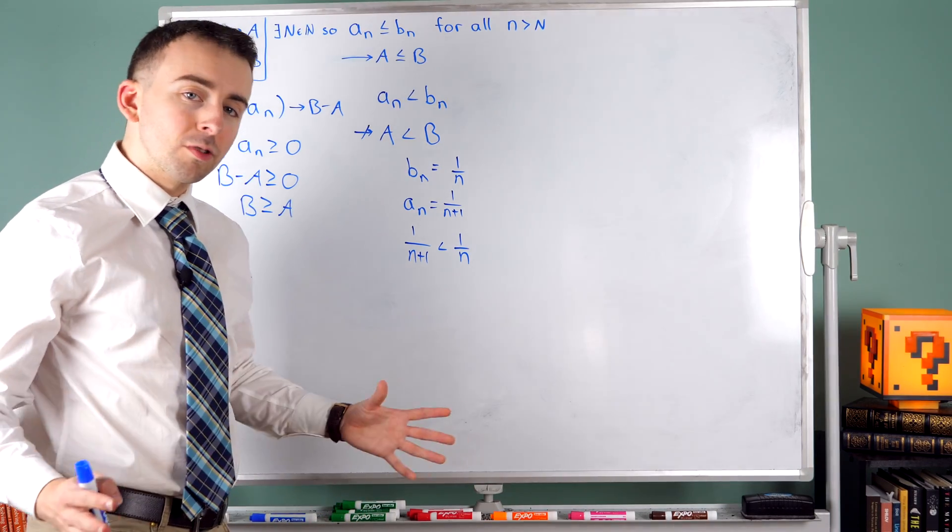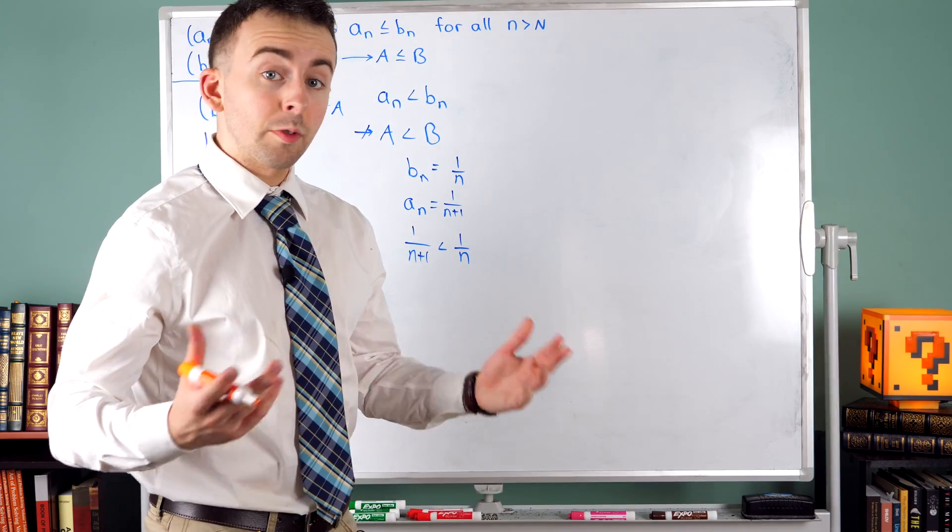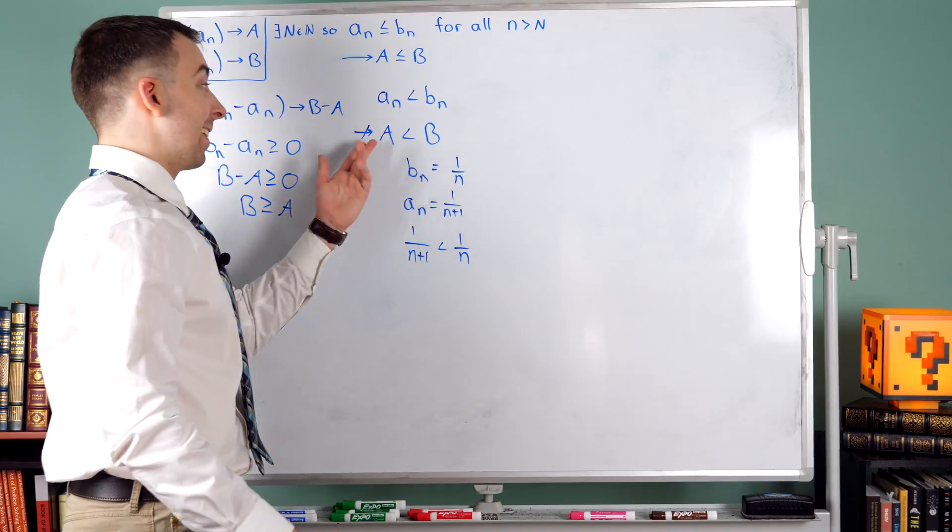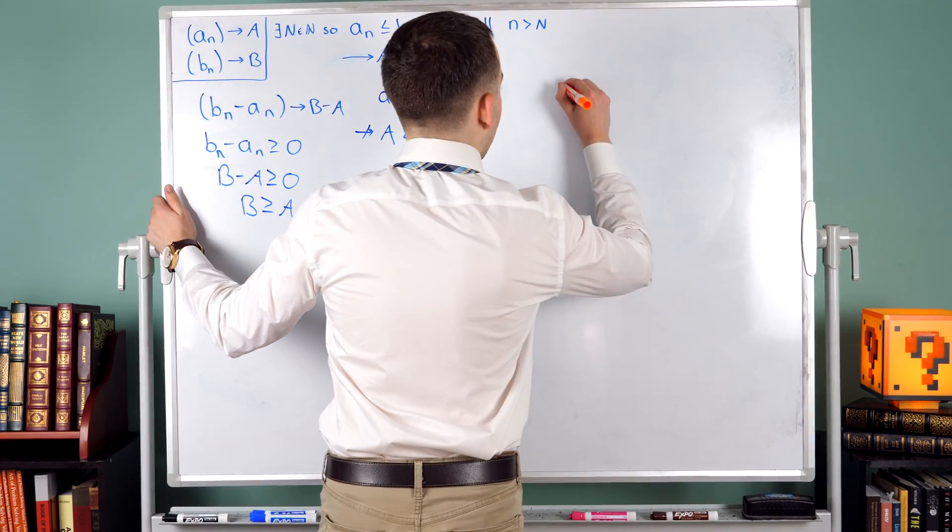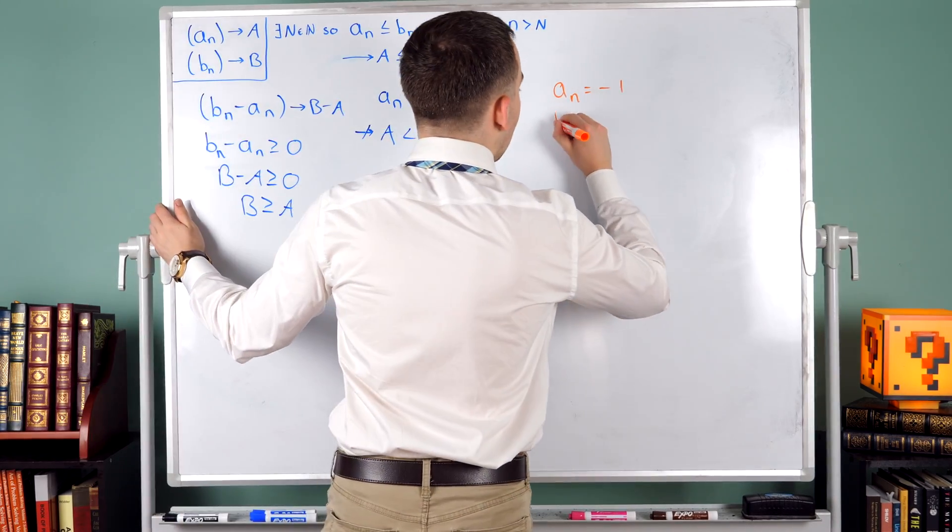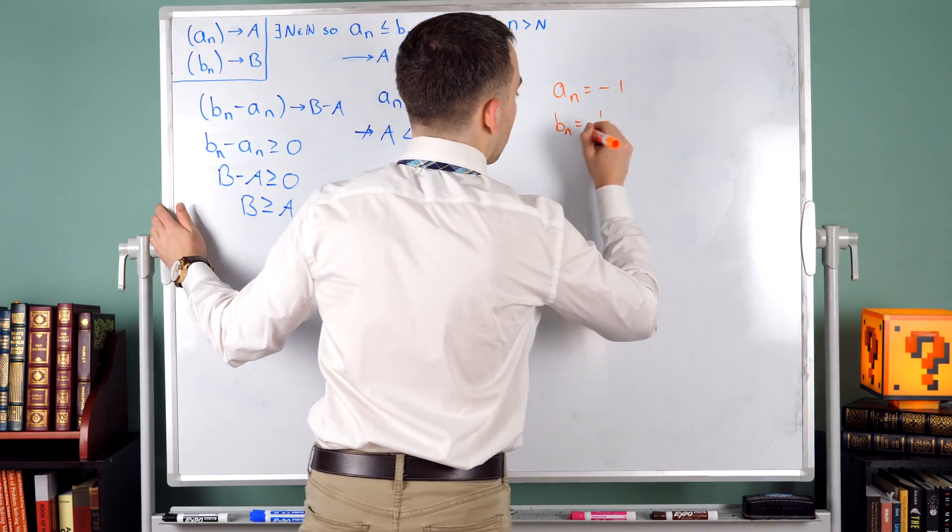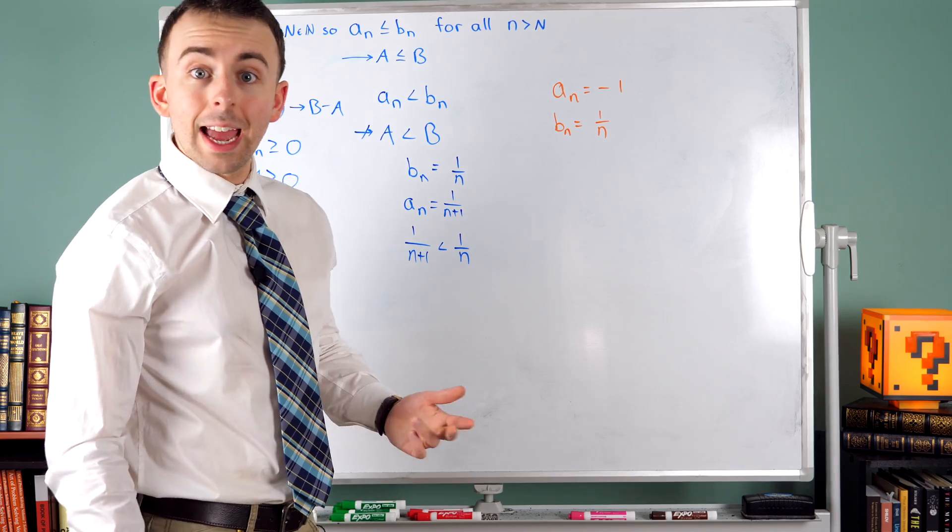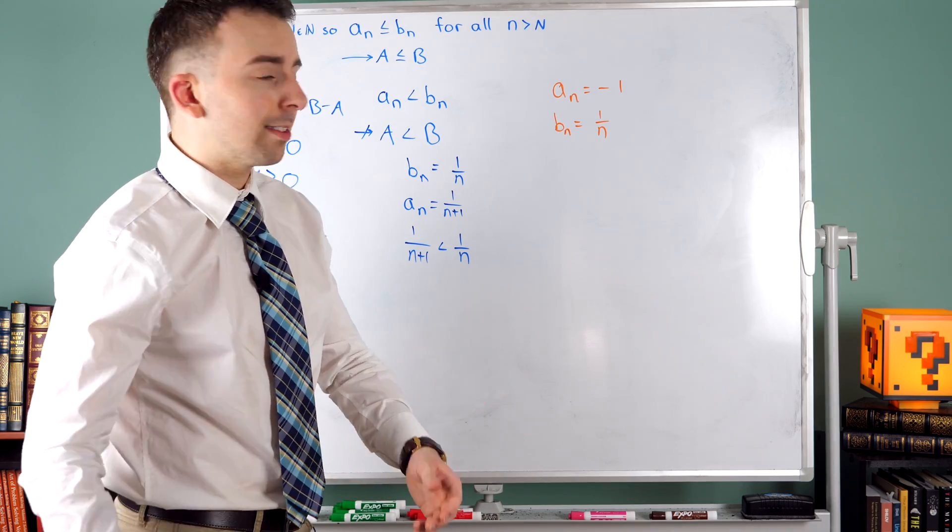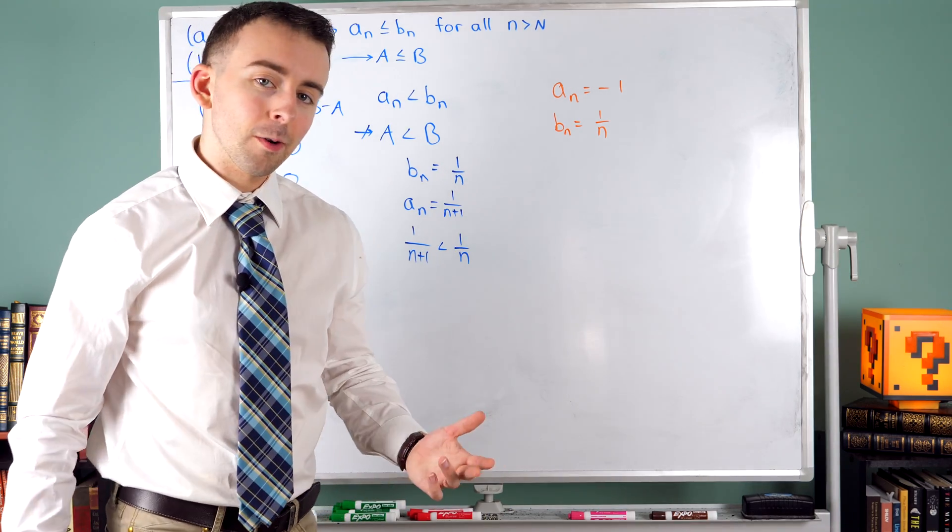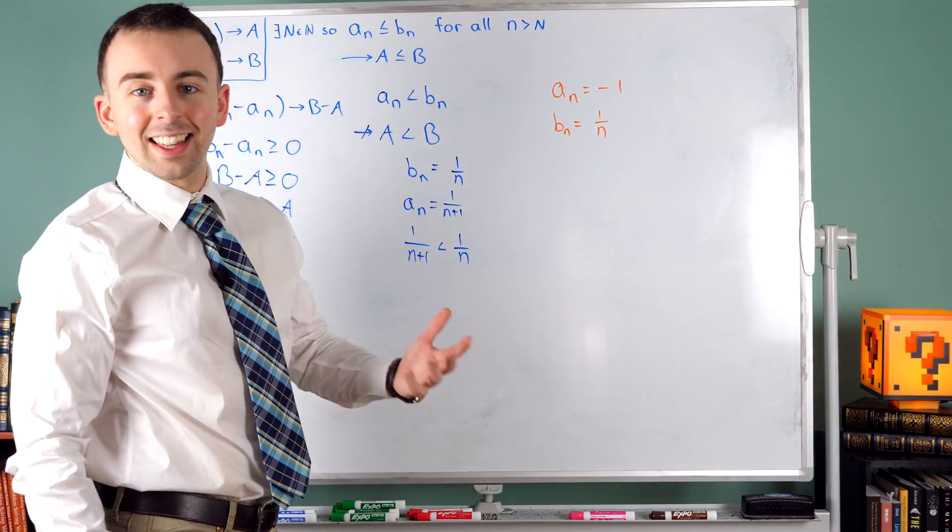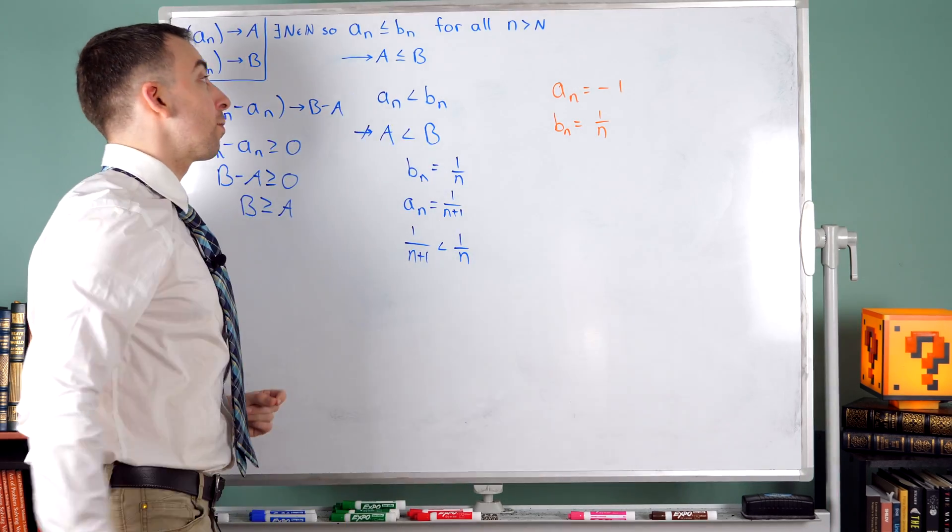So limits do not preserve strict inequalities. Now, of course, sometimes it will be the case that every term An is less than Bn and A is less than B. For an example of that, another simple example, An could be a constant sequence, always equal the negative 1, and Bn could still just be 1 over n. Here, clearly, every term of An is less than every term of Bn. The limit of An is negative 1, which is less than the limit of Bn, which is zero. But again, that's not something that we can just assume if all we know is that An is less than Bn.